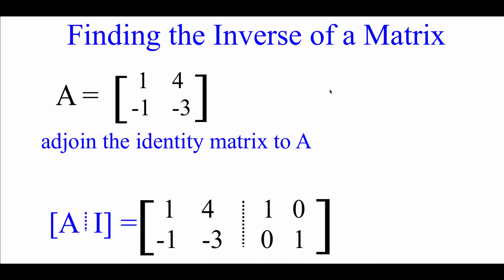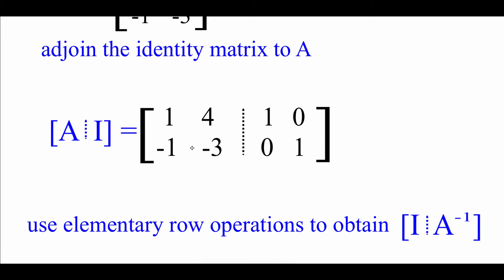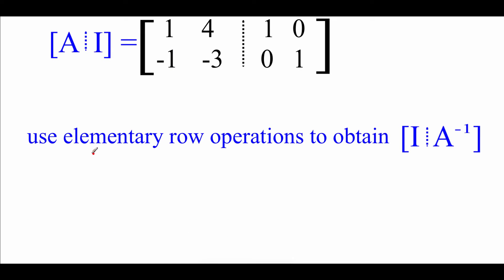Now we're going to look at finding the inverse of a matrix. Let's say we have matrix A as a 2x2 matrix. In order to find its inverse, we're going to attach an identity matrix onto the end of matrix A. Since matrix A is 2x2, we attach a 2x2 identity matrix — it looks like an augmented matrix with this additional piece. Then we'll perform row operations to get it into reduced row echelon form. Starting with row echelon form, the top row already has a leading 1, so we copy that into our new matrix.